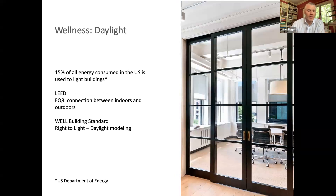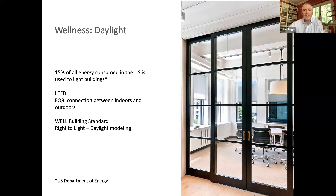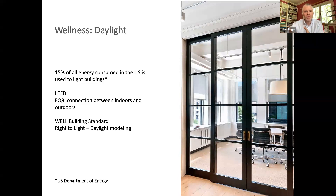There's also health of the planet — use less electricity if you're bringing more light deeper into space. Currently 15% of energy used in the US is used to illuminate buildings. LEED's Indoor Environmental Quality criterion 8 is to provide building occupants with a connection between indoor space and the outdoor through the introduction of daylight and views. The WELL Building Standard puts it more formally as a right to light for building occupants to support their circadian rhythm and reduce dependency on electricity.